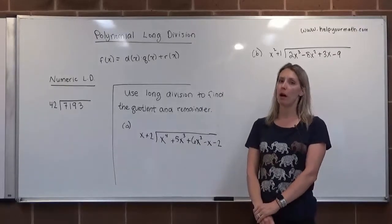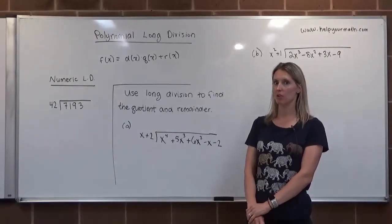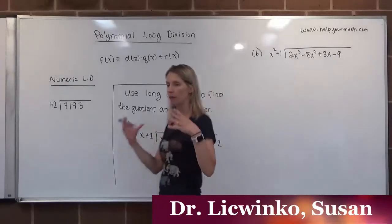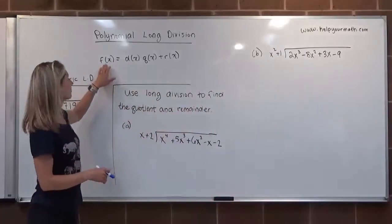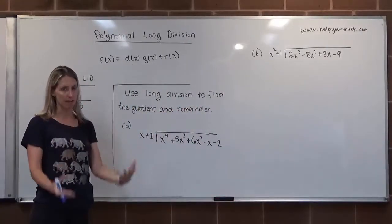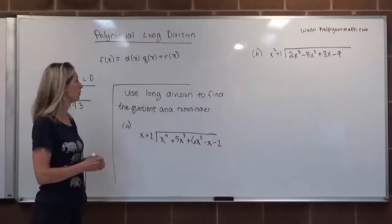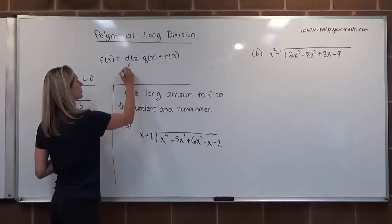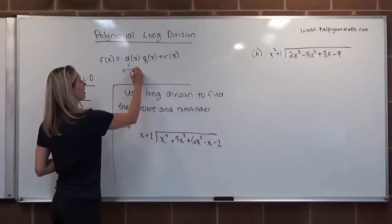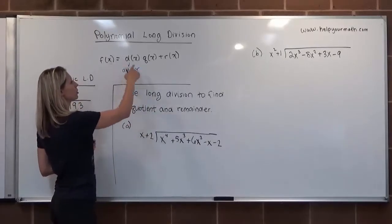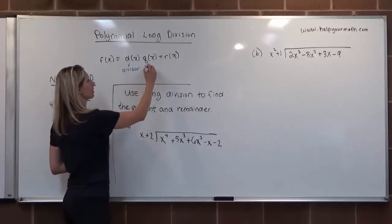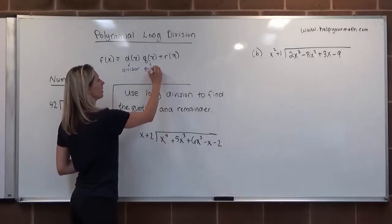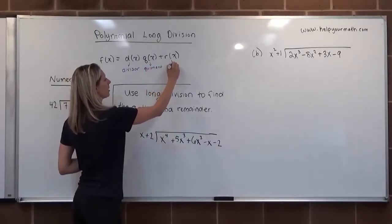In this video we're going to look at polynomial long division. If we have our function f(x) and we divide it by some other polynomial called the divisor polynomial, then that original function would equal the divisor times the quotient polynomial plus the remainder polynomial.